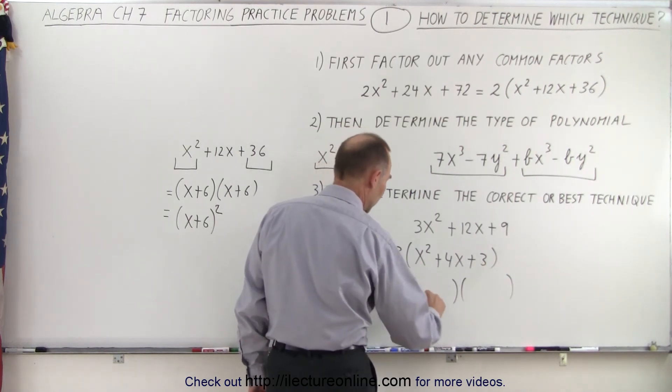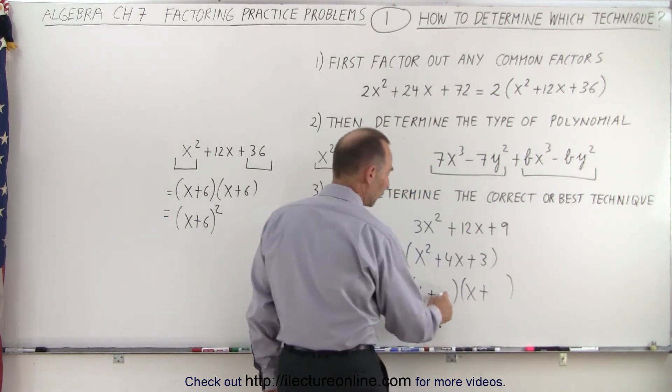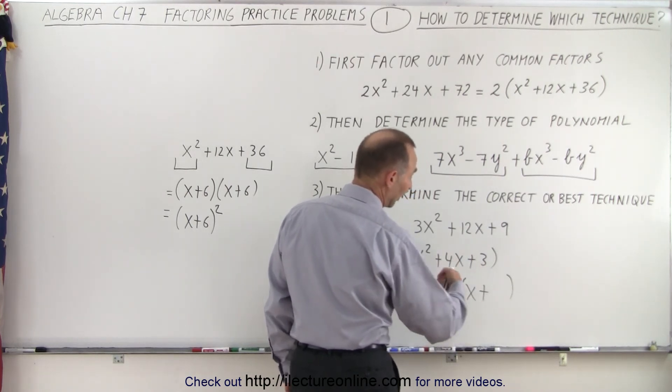Then we notice that the first and last term are not squares—the first term is but not the last term. And then you say well maybe we can go ahead and factor it like this: we're going to put two sets of parentheses. The first term is x squared, that means we need an x and an x. Everything is positive which means we need plus and plus. And now we're looking for two numbers: when I multiply you get three, when I add I get four. Well one and three, when you multiply you get three, when you add you get four, so the solution is one and three.